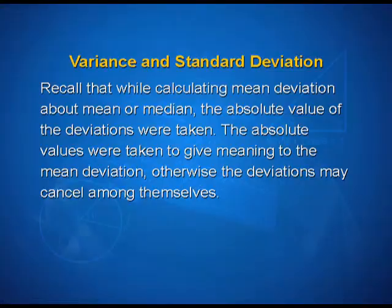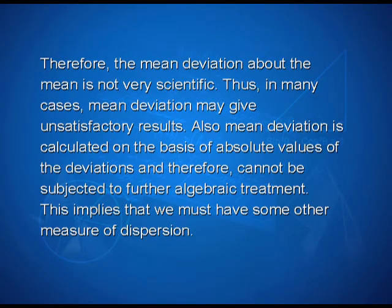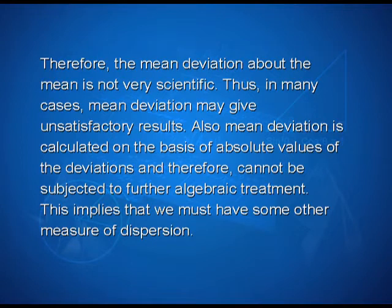Now, students, let us study about variance and standard deviation. Recall that while calculating mean deviation about mean or median, the absolute values of the deviations were taken. The absolute values were taken to give meaning to the mean deviation; otherwise, the deviations may cancel among themselves. Therefore, the mean deviation about the mean is not very scientific, and in many cases mean deviation may give unsatisfactory results. Also, mean deviation is calculated on the basis of absolute values of the deviations and therefore cannot be subjected to further algebraic treatment. This implies that we must have some other measures of dispersion.